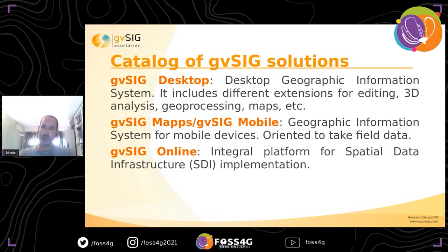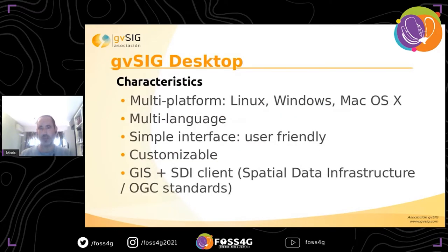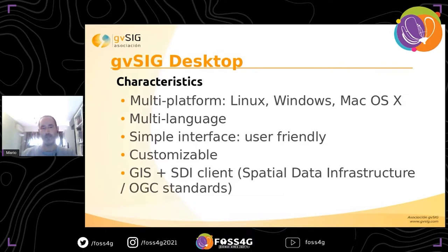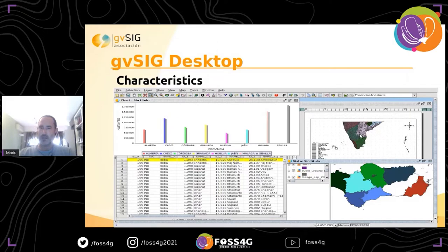The first product is GBC Desktop, available for Linux, Windows, and Mac, with both portable and installable versions. It's translated to more than 25 languages, all by volunteers. It's user-friendly and can be customized. It's not only a desktop GIS but also an SDI client. Here you can see several screenshots — you can create your own views with remote and local layers, raster and vector layers with symbology, editing tools, geoprocessing, and more.